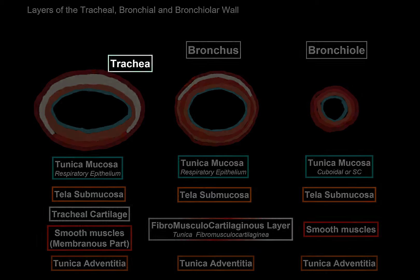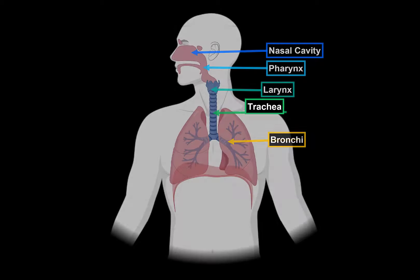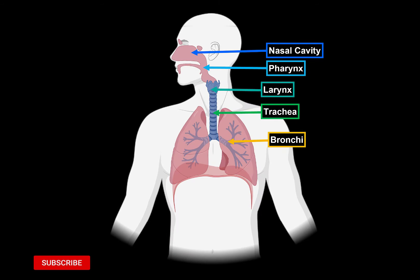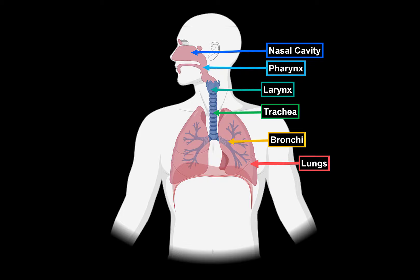That was all for the anatomy of the trachea and the bronchi of the respiratory system. Our next video is going to be about the lungs.